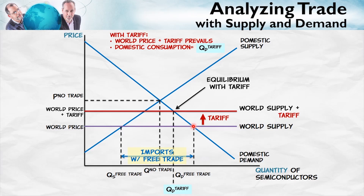Domestic consumption falls from here to here. What about domestic production? With the higher price, domestic suppliers are now willing to supply more.